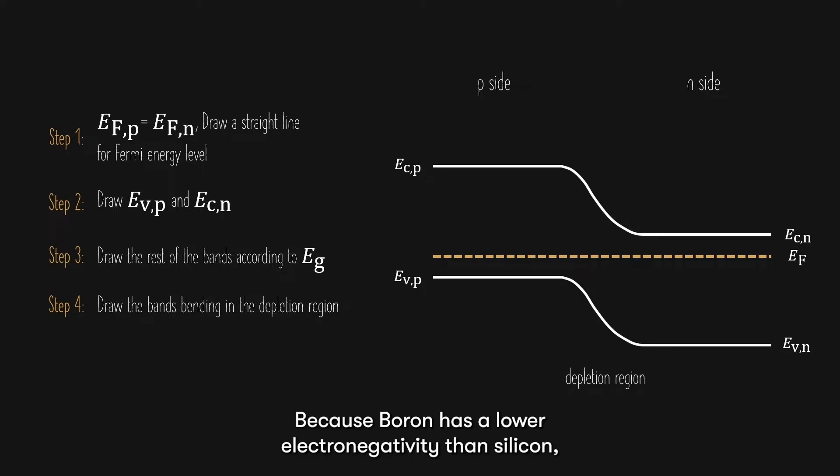Because boron has a lower electronegativity than silicon, the average electronegativity of the entire crystal lattice reduces, shifting the bands upwards. For n-type materials, the opposite happens, which is why the bands shift downwards.